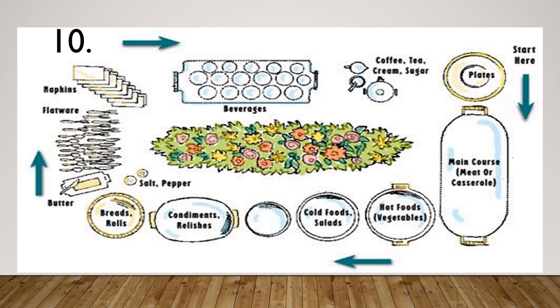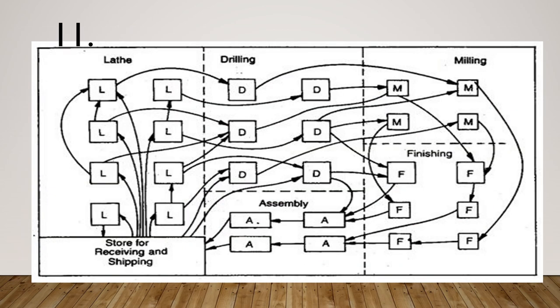This is number 11. As you can see, there is no definite flow — anything goes. The arrows point from one area to another in various directions. The path taken varies. Considering this type of layout, do you think they are producing a standardized product or a customized product? Use that to properly identify whether it falls under product layout, process layout, or fixed position layout.